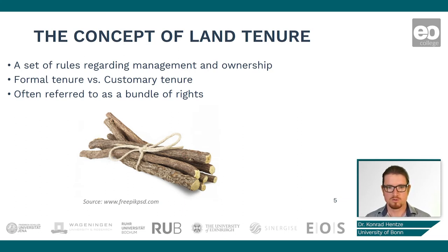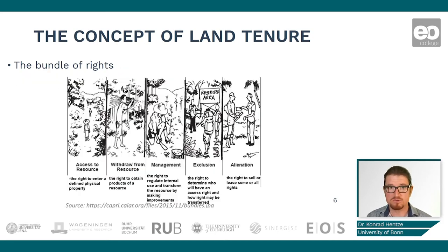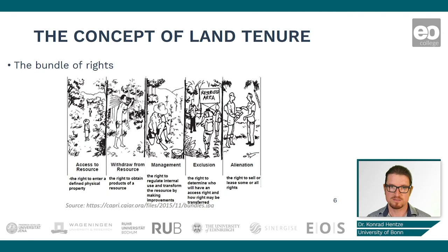You might imagine there are many different rules and regulations that form this land tenure system. These aspects are commonly referred to as 'sticks in a bundle,' or altogether as a 'bundle of rights.' I've brought this well-known graph showing five broad groups of rights: access to resources, withdrawal from resources, management of land — for example if someone wants to plant something — exclusion, meaning you can exclude someone from entering your property, and alienation.